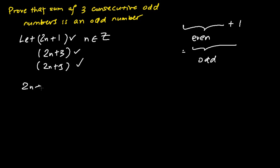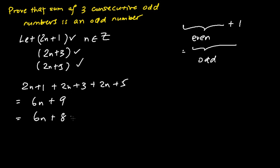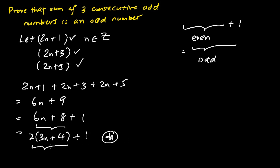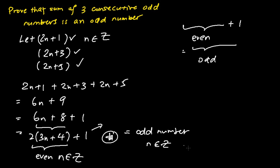Summing gives us 2n + 1 + 2n + 3 + 2n + 5, which equals 6n + 9. We can further express this as 6n + 8 + 1, then factorize the first two terms as 2(3n + 4) plus 1. The first term 2(3n + 4) is always an even number for all integers n, and adding 1 makes the whole expression always an odd number for all integers n.